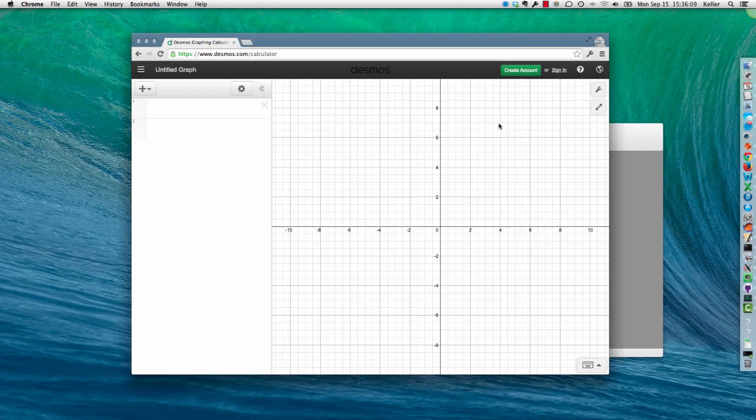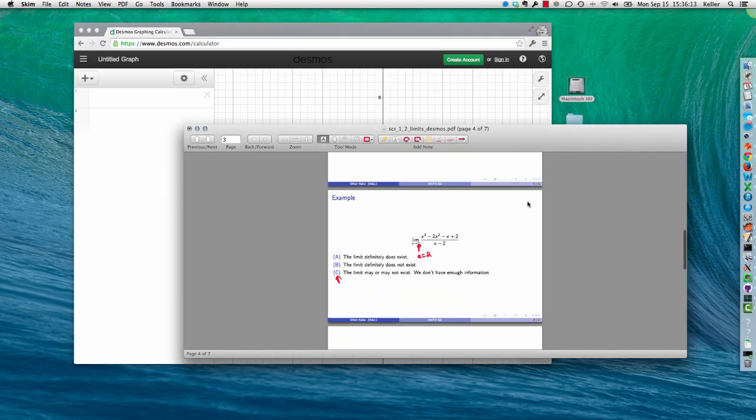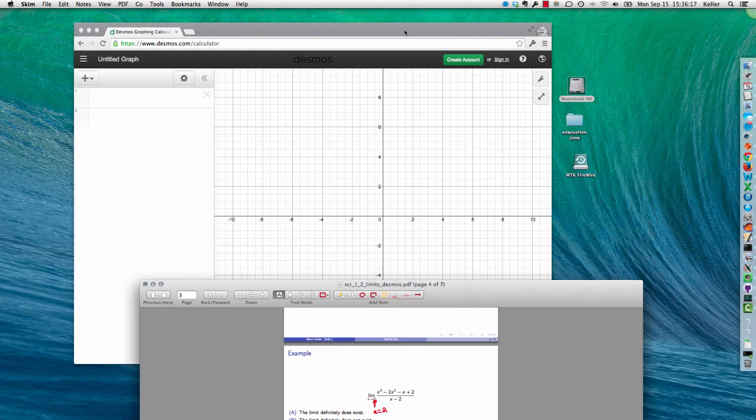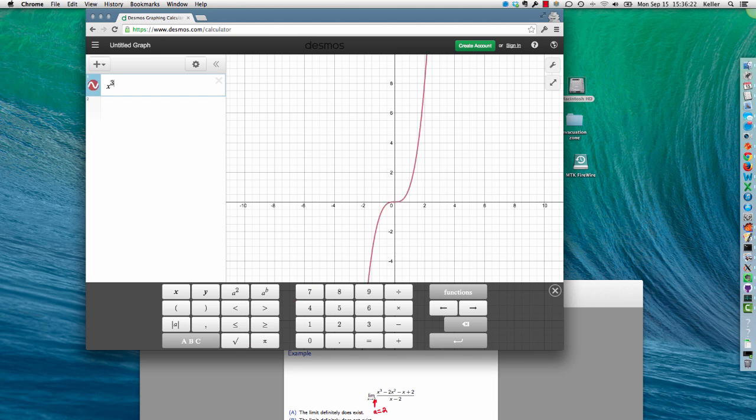So I'm going to come over here to the Desmos graphing calculator, and I need to get a peek at what my function is again. And so I'm going to plot in here, and I'm going to say I want to see x cubed, and I just did the caret key, shift 6, to get that.